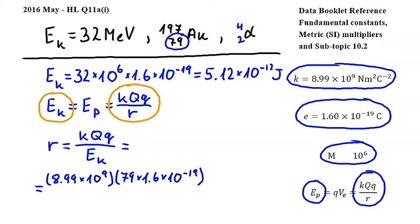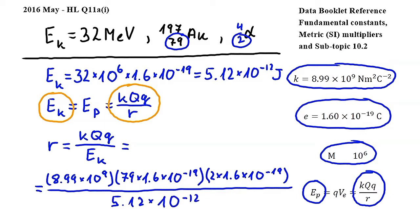Similarly, since the alpha particle has two protons, its charge will be 2 times 1.6 times 10 to the power of negative 19. And this is divided by 5.12 times 10 to the power of negative 12.